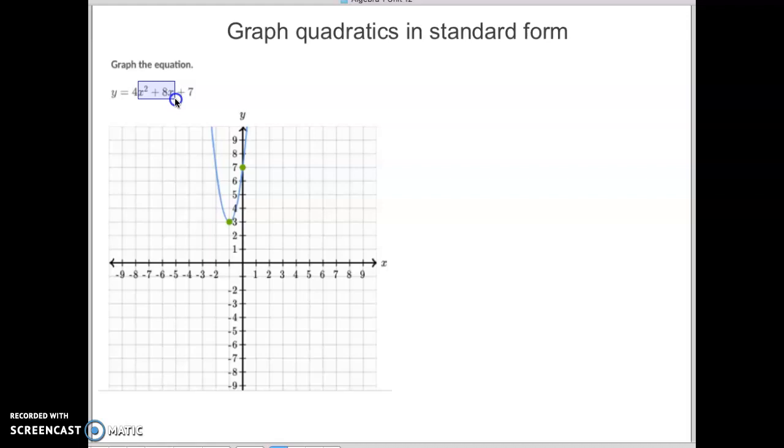Then if you remember the formula where your c-term has to equal half of your b-term squared. Well, if your b-term now is 2x, half of that would be 1 and 1 squared would be 1. So we need this to be the 4 that we pulled out, half of our b-term squared. Again, half of 2 is 1, 1 squared is 1.